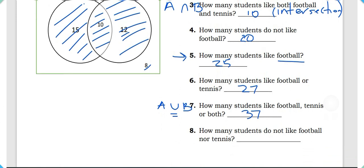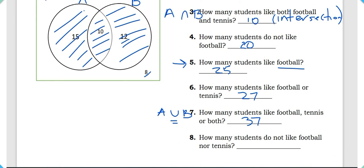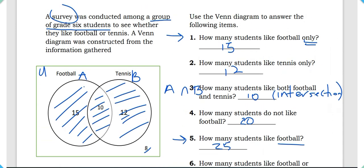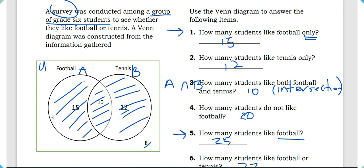Everything outside the two circles is not included in the union. Our last question: how many students do not like football nor tennis? This refers to students that fall outside both subsets, and the answer is 8 — eight students like neither football nor tennis.